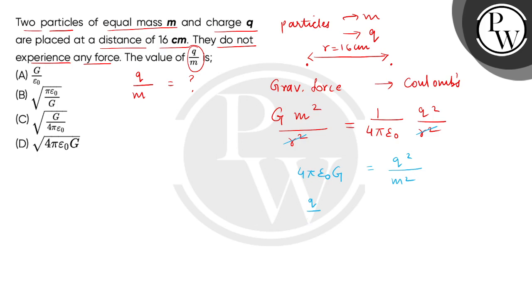So we will get Q over M equals square root of 4 pi epsilon naught G. So the correct answer will be option D. Thank you.